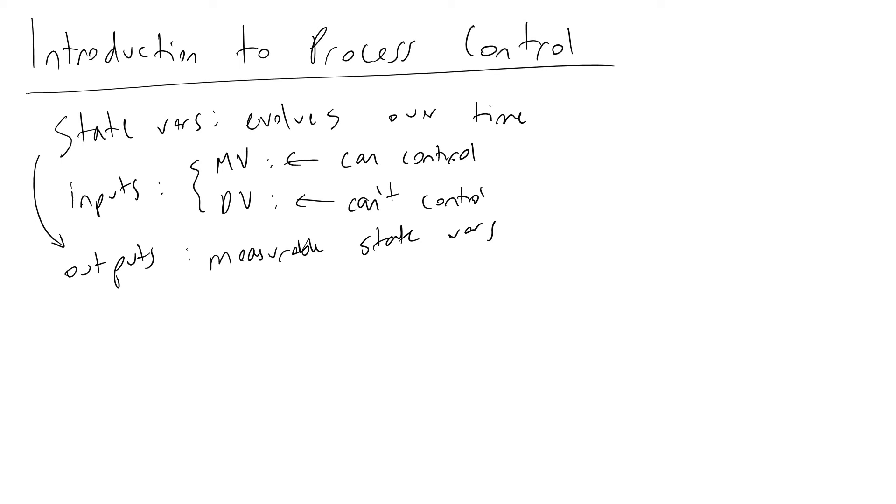A key note in process control is that much of the work involves systems not operating at steady state. These are transient systems evolving with time. The d by dt term will almost never be set to zero because we're interested in seeing how systems respond to perturbations.